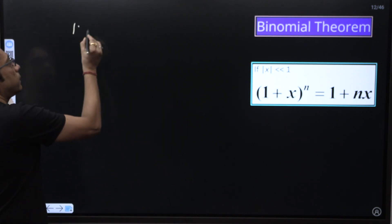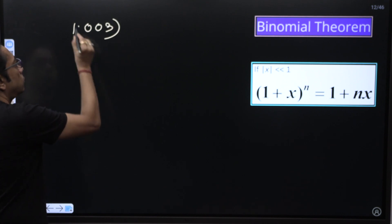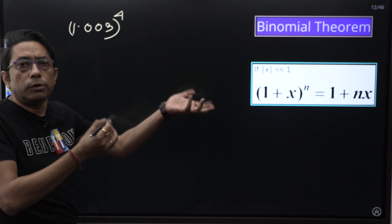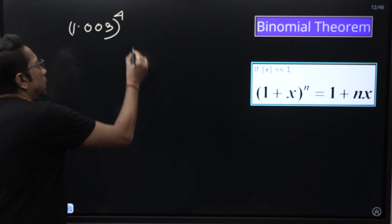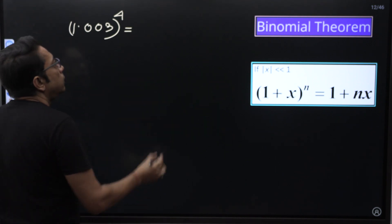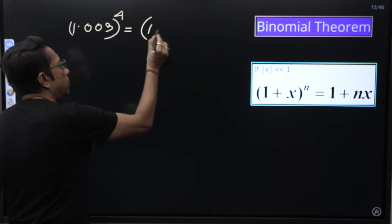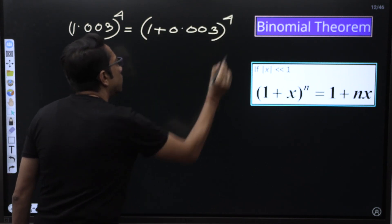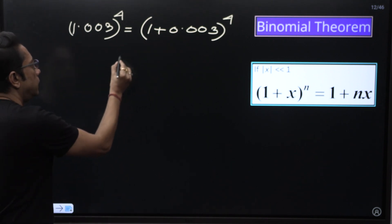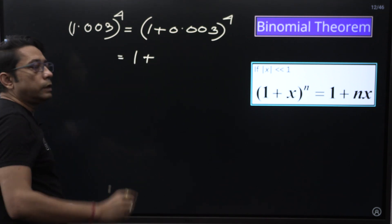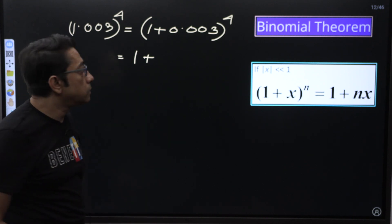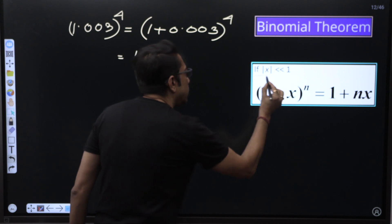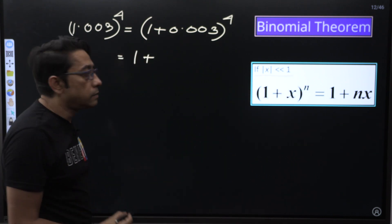Suppose we need the value of 1.003 to the power 4. How to calculate this without a calculator? Very easy. We can write this as 1 plus 0.003 to the power 4. This 0.003 is very, very small. The key point is that X here must be very, very less than 1.